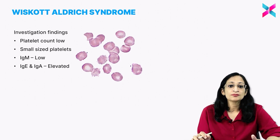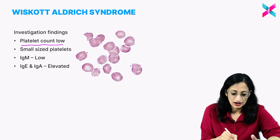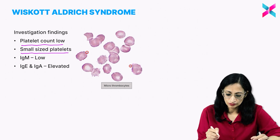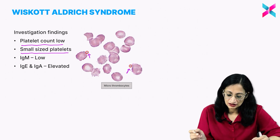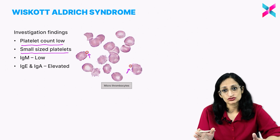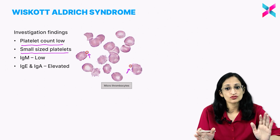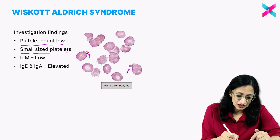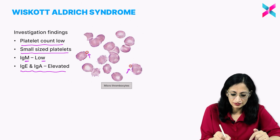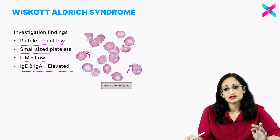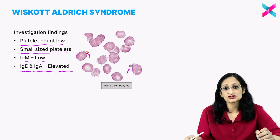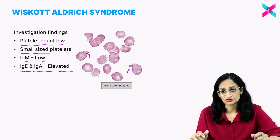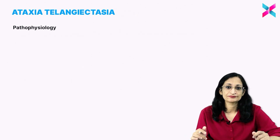On investigation, platelet counts are low and the platelets are small in size — these are called microthrombocytes — lesser in number and lesser in size. IgM levels will be low, while IgE and IgA will be elevated. The confirmatory diagnosis is by identifying the WAS gene mutation.